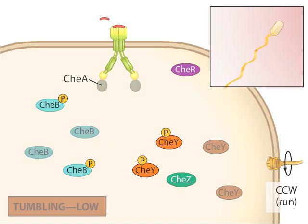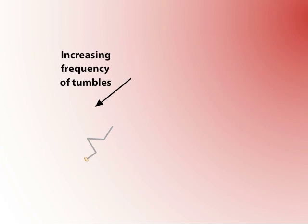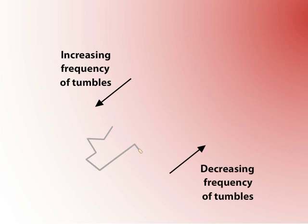The result of changing the frequency of tumbling as the cell moves away from attractant — increasing the frequency of tumbles — or toward an attractant — decreasing the frequency of tumbles — means the net movement of the cell will be toward higher and higher concentrations of attractant. Because attractants typically indicate a food source is nearby, chemotaxis is an important mechanism for survival in the natural environment.